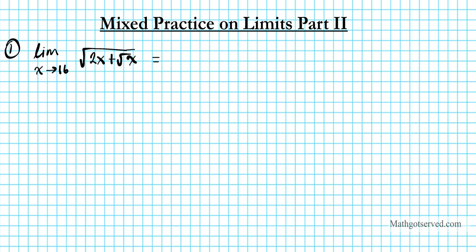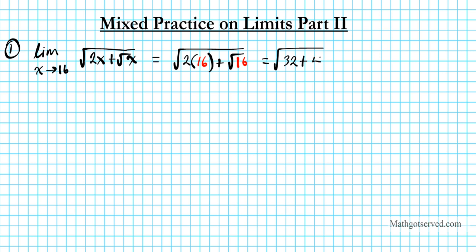So we're going to have the square root of 2 times 16 inside the radicand plus the square root of 16. What's inside the radicand: 2 times 16 is 32, plus the square root of 16 is 4, which equals the square root of 36. And the square root of 36 is 6.